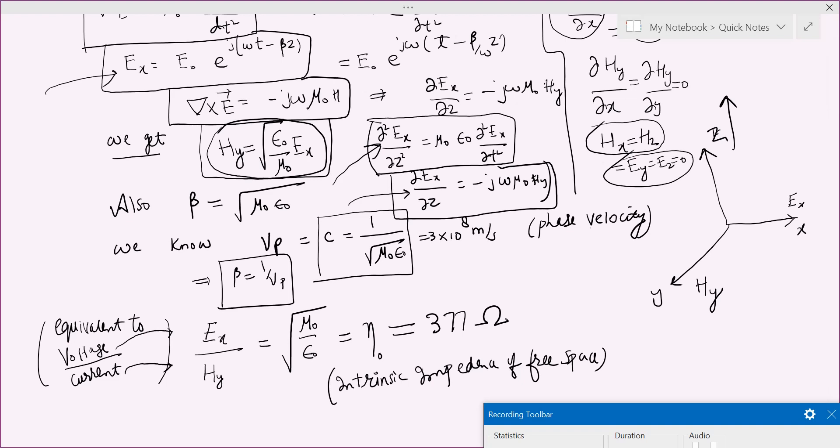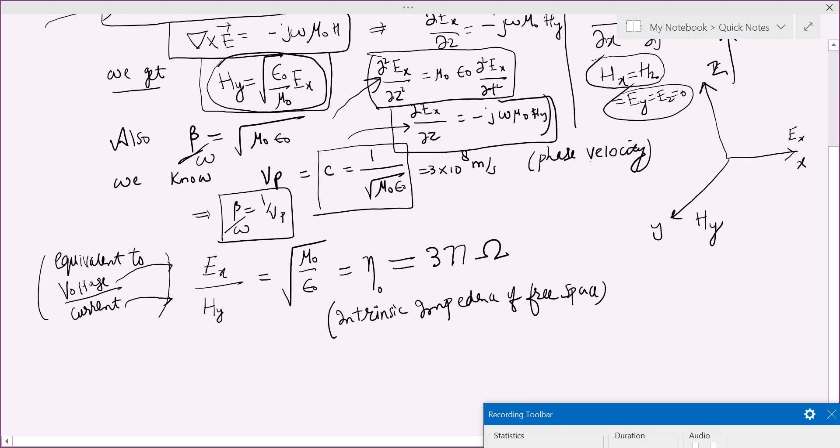And beta, which we just now expressed, I have here one typo. This is beta by omega, sorry. Beta by omega is one by V_p, so we can write beta as omega times root of mu naught epsilon naught. These are some very important relationships which will be used again and again.